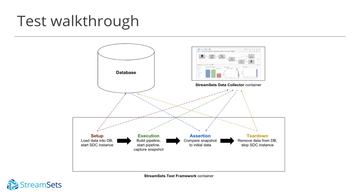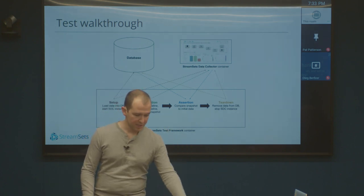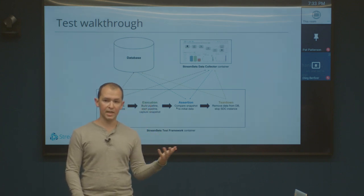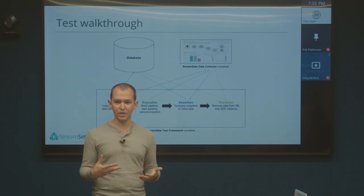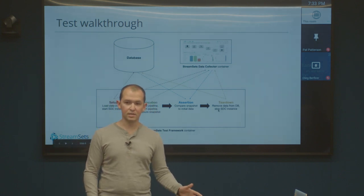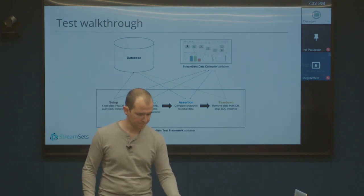What this test looks like follows a paradigm we use on a lot of our tests — it's like a four-step process. Step one is setup, where we create a table in an existing database and load data into it. We also start up one of these SDC containers, so I mentioned we want the ability to dynamically spin up data collectors so they have the right stage libraries — that's part of the setup phase. Step two is execution, where we actually programmatically build the pipeline, start it, and capture a snapshot of the data that flows through the pipeline. Step three is assertion, where we do a comparison of the snapshot data we get to the data we initially loaded in step one. And step four is teardown, where we remove the data we put into the database, and also stop SDC instances — though we also have an option to keep them around if you want to debug something.